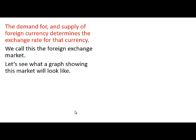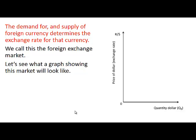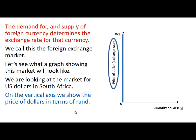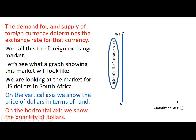Let's see what a graph showing this market will look like. We are looking at the market for United States dollars in South Africa. On the vertical axis we have the price of dollars in terms of Rand — so Rand per dollar. And on the horizontal axis we show the quantity of dollars.